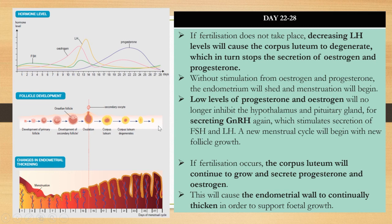The endometrium wall sheds after Day 28 and a new cycle begins. I hope you can understand the menstrual cycle — make sure you understand the changes in hormone levels and how they relate to the processes occurring during the menstrual cycle.